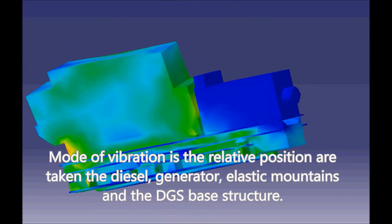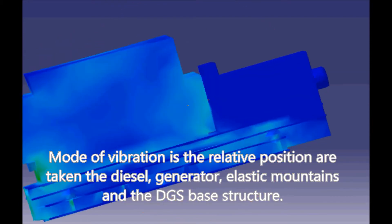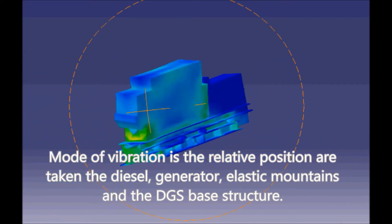Mode of vibration is the relative position taken by the diesel, generator, elastic mountings, and the DGS base structure.